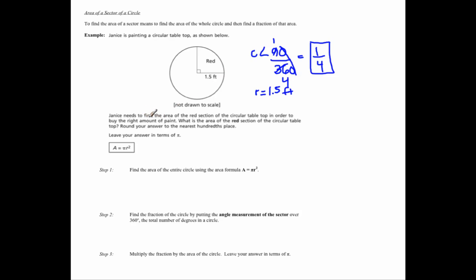I read the problem. Janice needs to find the area of the red section of the circular tabletop in order to buy the right amount of paint. The red section, the red sector. What is the area of the red section of the circular tabletop? Round your answer to the nearest hundredths place. So in order to round my answer to the nearest hundredths place, I know I'm going to have to go to the thousandths place. And leave your answer in terms of pi.